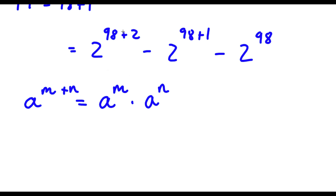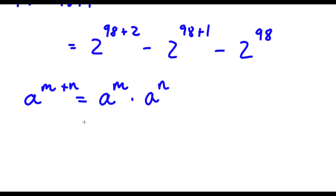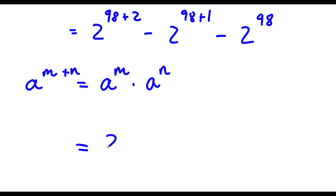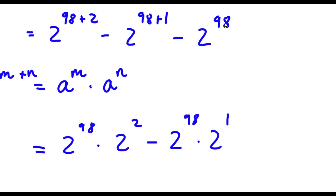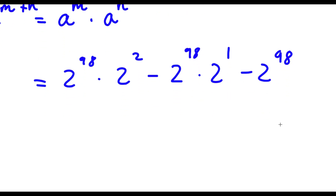Now using the rule that a to the power of m plus n equals a to the power of m times a to the power of n: 2 to the power of 98 plus 2 becomes 2 to the power of 98 times 2 to the power of 2. Then 2 to the power of 98 plus 1 becomes 2 to the power of 98 times 2 to the power of 1. And 2 to the power of 98 we simply leave by itself. So all three terms have 2 to the power of 98 in them.